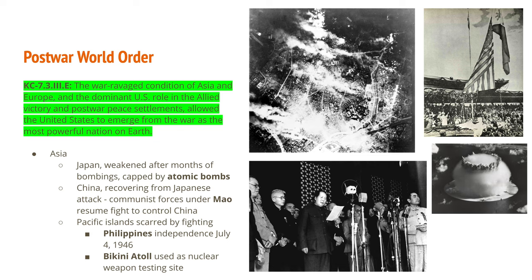The Bikini Atoll, a group of islands in the Marshall Islands in the Pacific, was used as a nuclear weapon testing site after the war. You can see an image of a nuclear weapon being tested with several Navy ships nearby to observe the effects of the nuclear bomb on military equipment. Eventually, after two tests, the U.S. stopped the testing, though there were human costs as people had to be relocated, and environmental costs from the radiation these bombs caused.